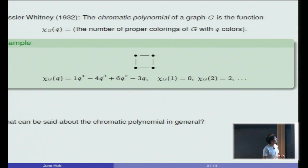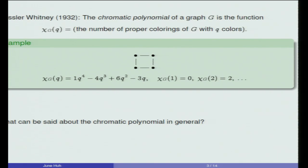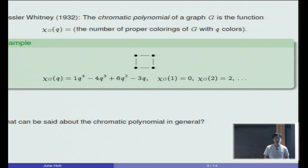So you color the vertices of your graph using two different colors whenever they are connected by an edge. This function turns out to be a polynomial in the variable Q. For example, if you compute the chromatic polynomial for this small graph on four vertices, the polynomial you get is this polynomial with coefficients 1, -4, 6, and -3. So for example, if you want to figure out in how many different ways you can color this graph using two colors, what you do is you plug in Q equals 2, and the value at that point, which is 2 in this case, will tell you there are exactly two different ways of coloring this graph using two colors.